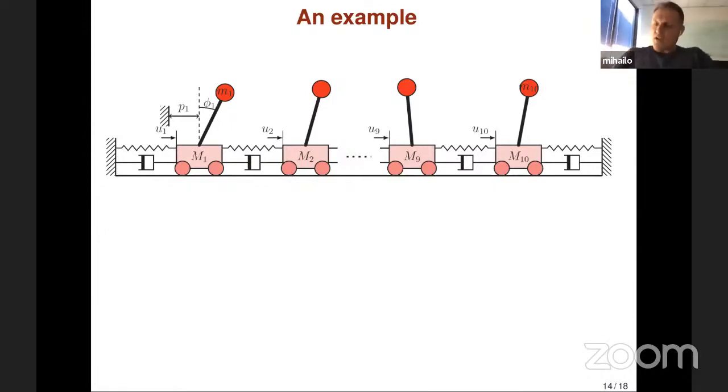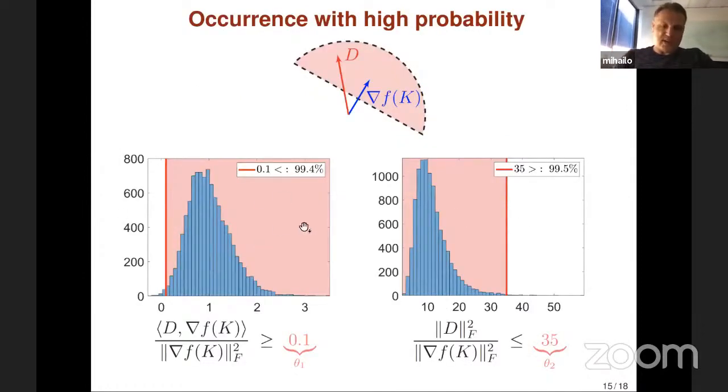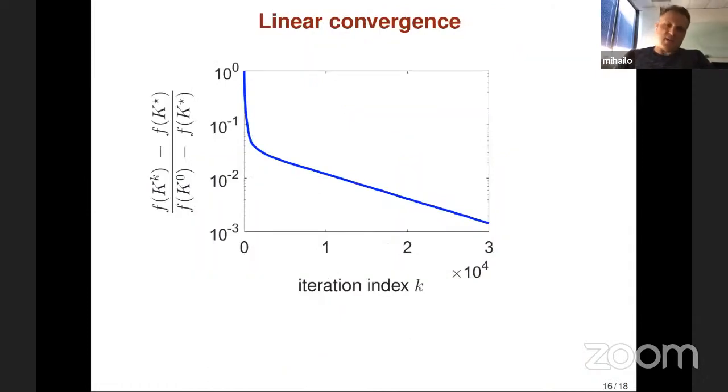Everything here is done in an offline fashion around certain operating points. What these two plots show are histograms of these two events that we want to hold with high probability. This is with probability of 0.994 and probability 0.995. If you choose these parameters theta 1 and theta 2 properly, you have this. We have linear convergence with a smooth curve. There are no stochastic oscillations that are typical for stochastic algorithms.